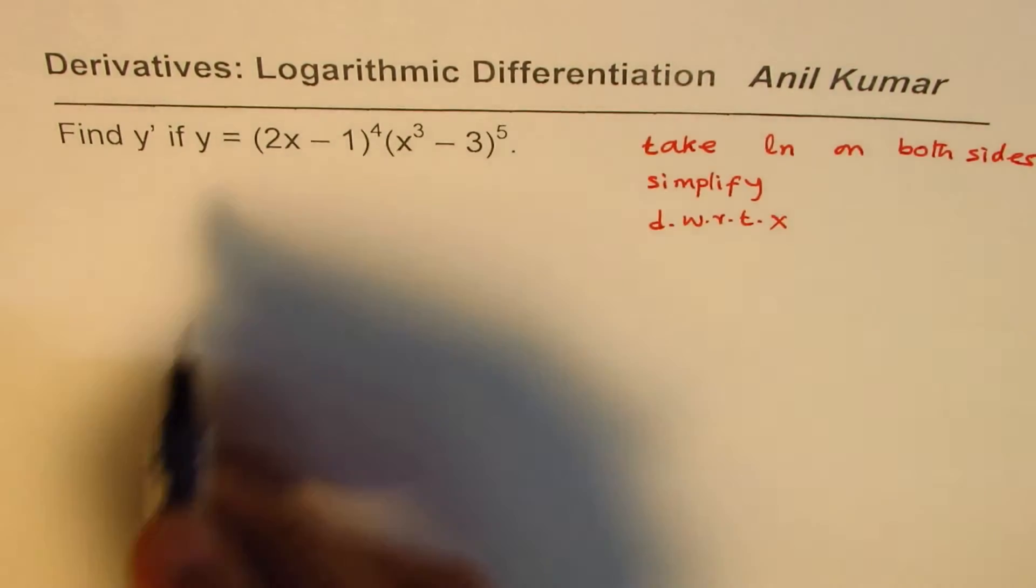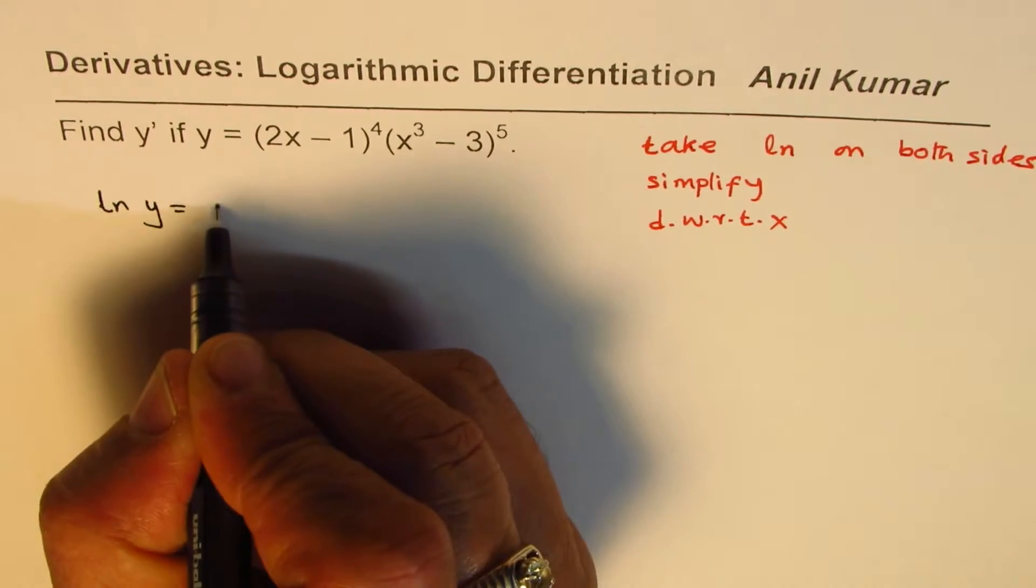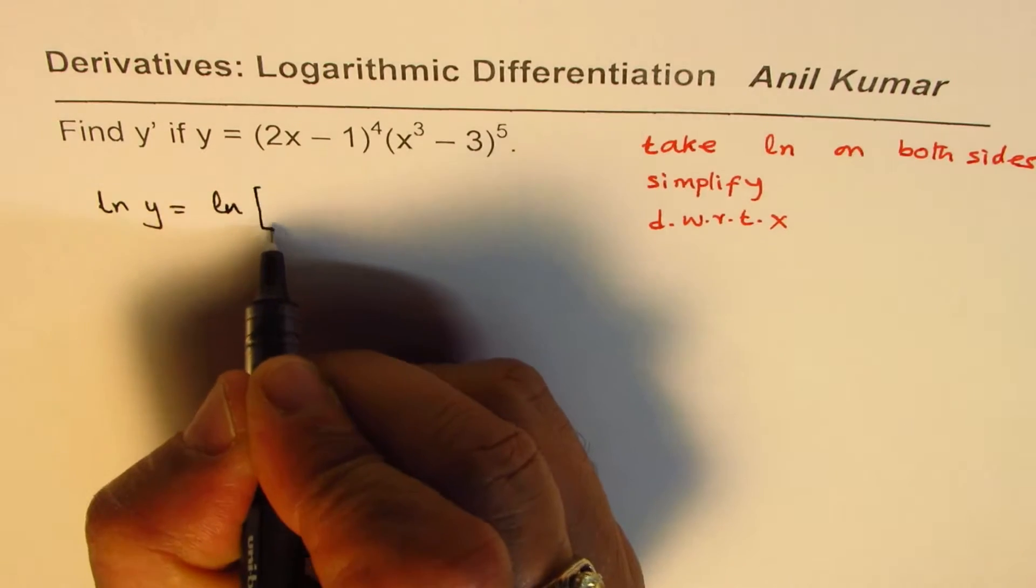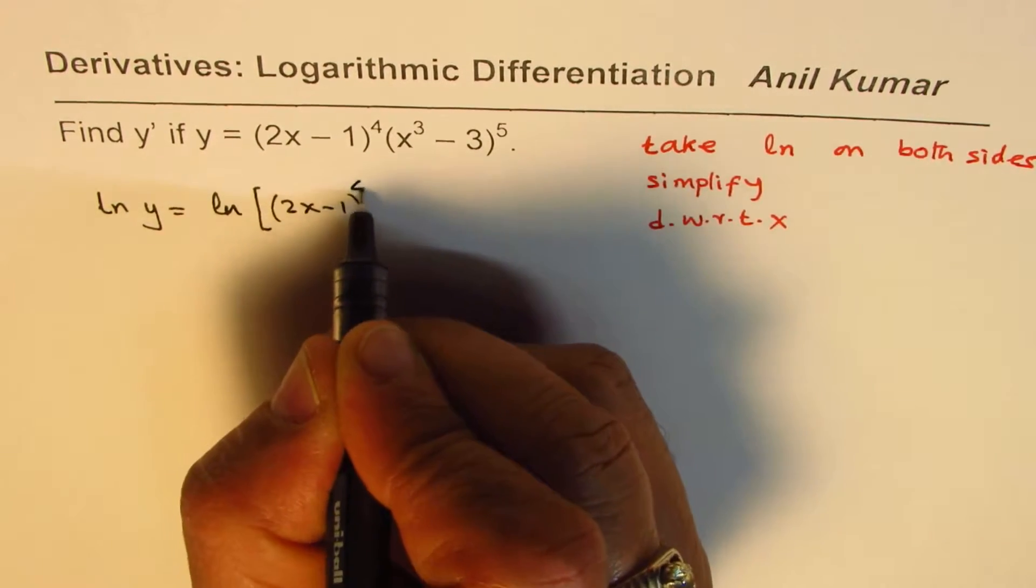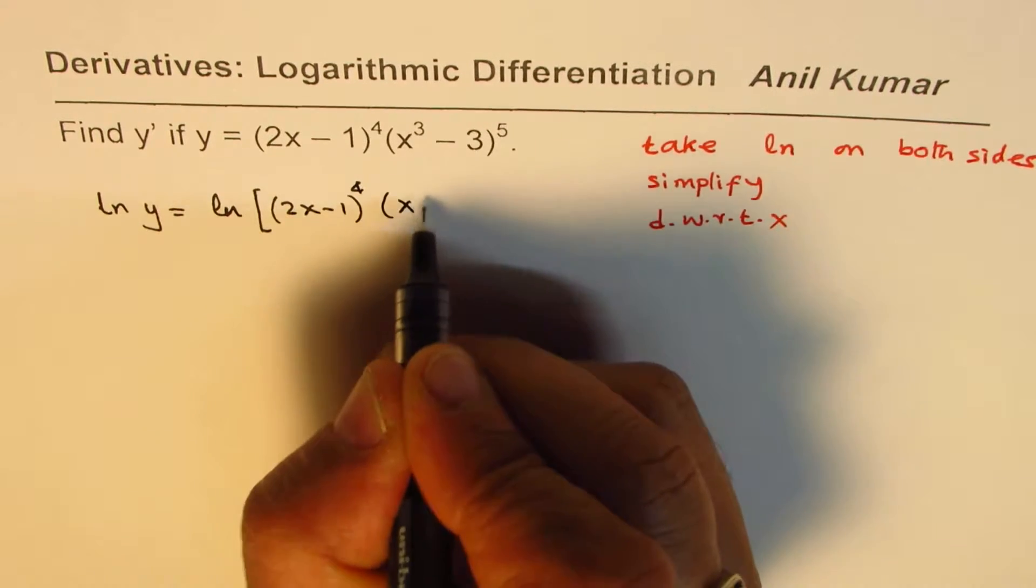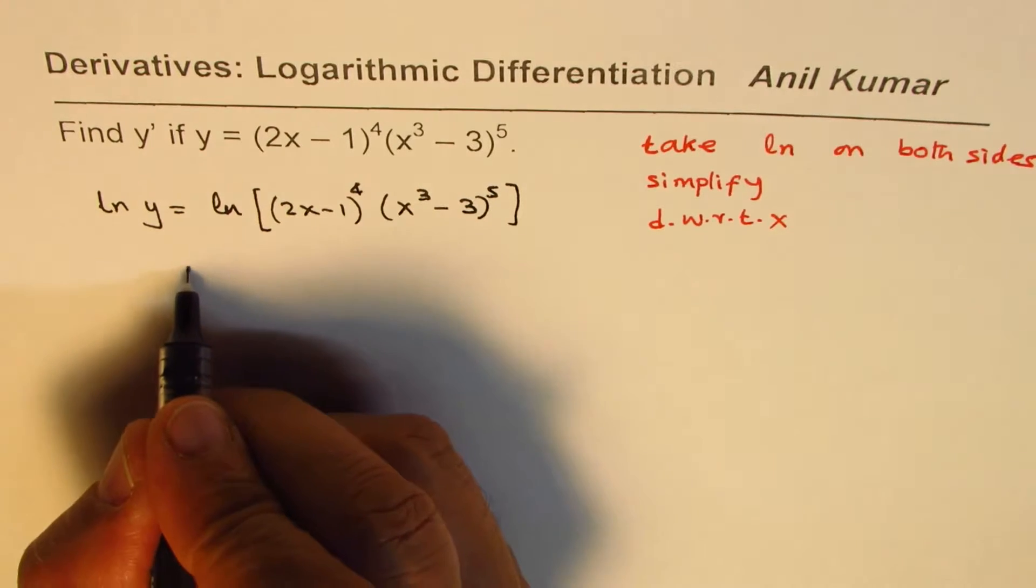If I take log on both sides for the function, what do we get? We get ln y equals ln of the function. Let me write down this function as such first: (2x - 1)^4 times (x^3 - 3)^5.